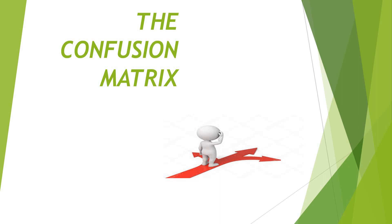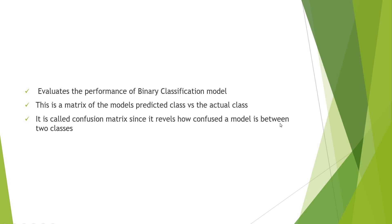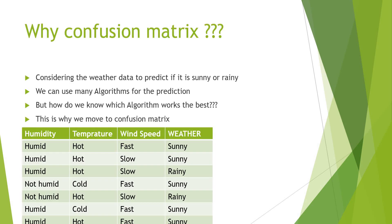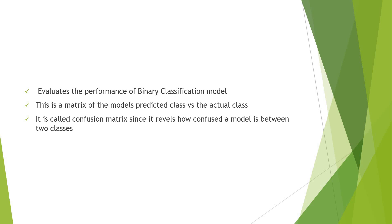Hello, let us discuss the confusion matrix. The confusion matrix is used to evaluate the performance of binary classification models. This is a matrix of the model's predicted class versus the actual class.